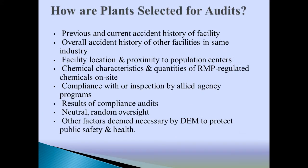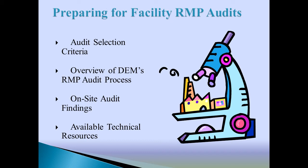Audits are different from inspections because with audits you're given a number scoring system. You know exactly where you scored very high or where you scored low and need to address it. That score will also indicate if you're way off the mark or fairly close to where you should be, and what specific measures you need to take to come up to speed.